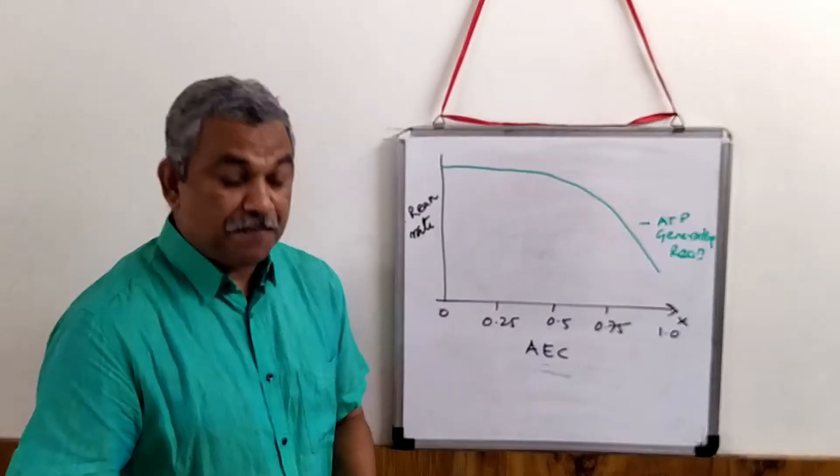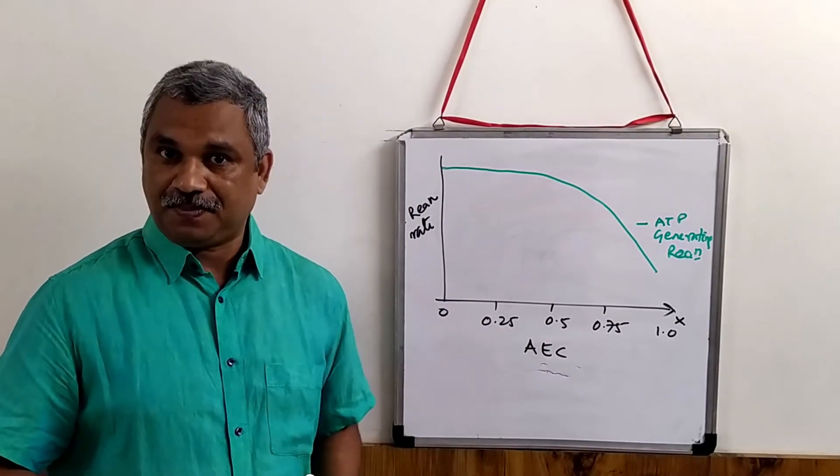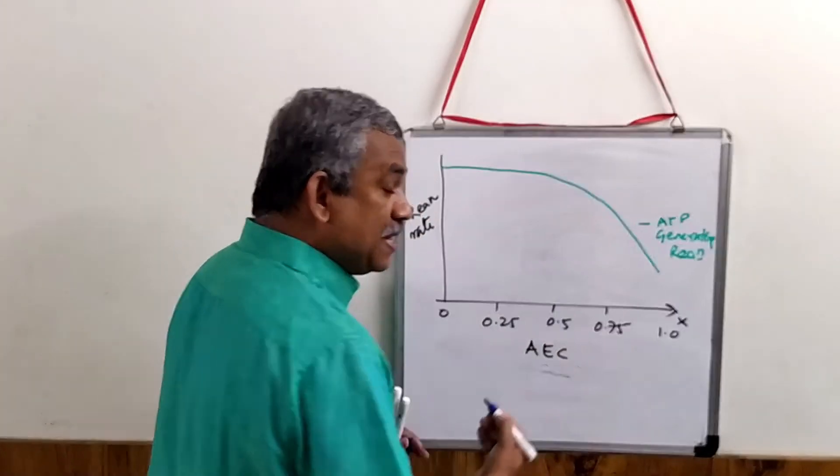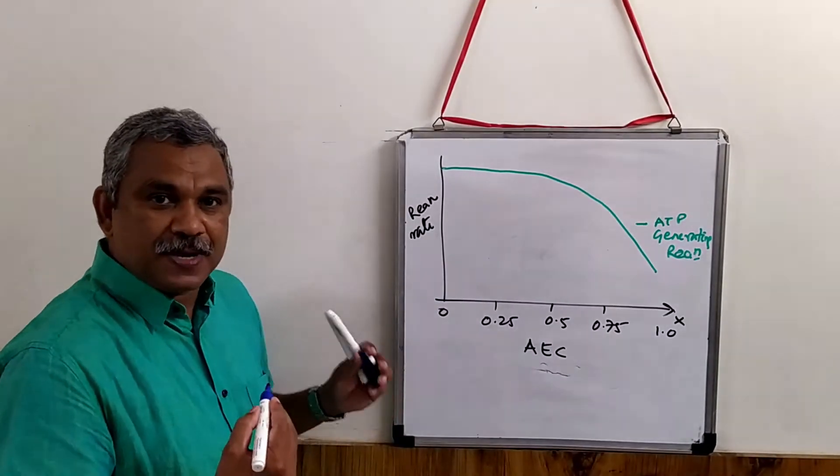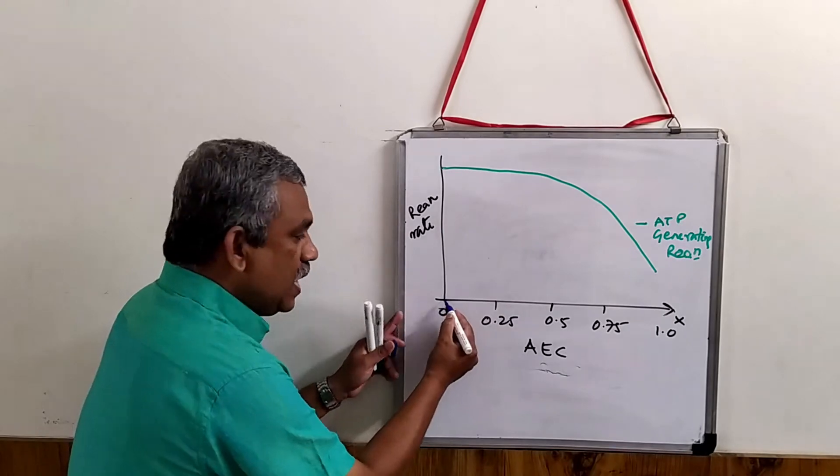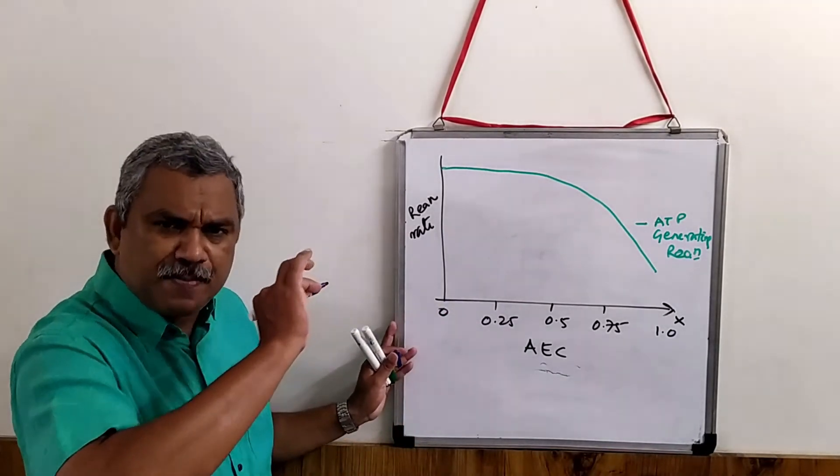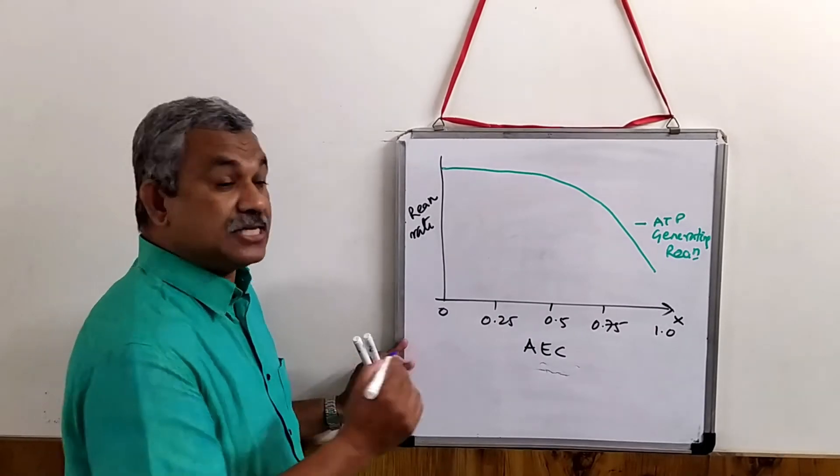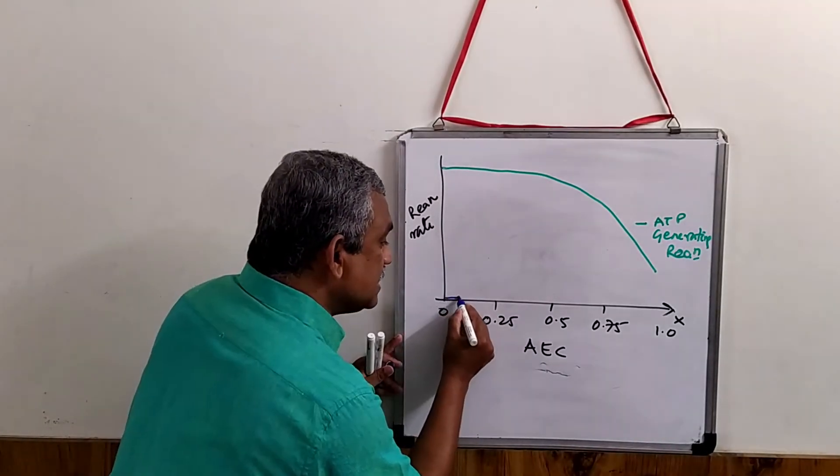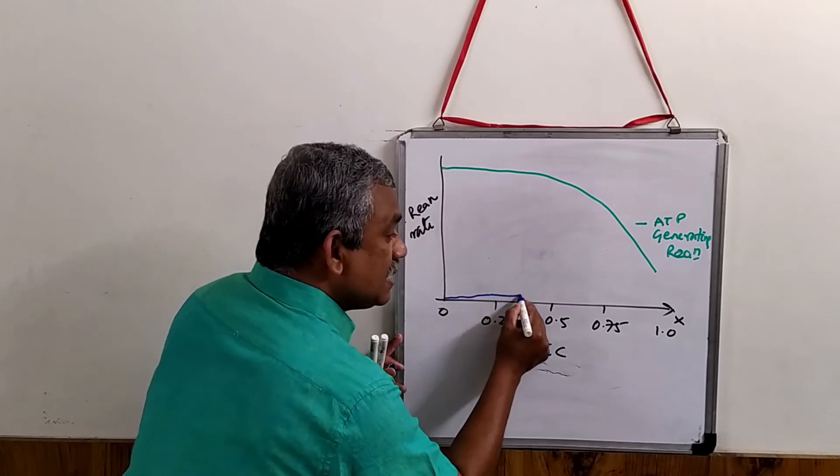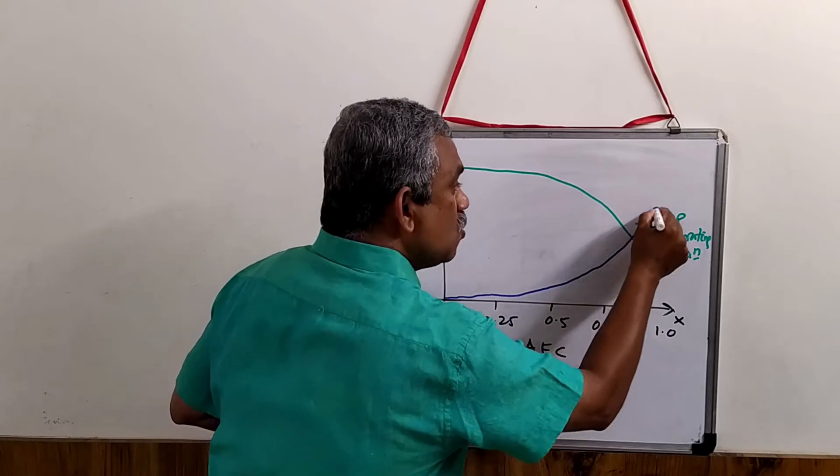Now, what happens? Suppose when the ATP levels are very high. So when ATP levels are very high, what will happen is, when it is very low, the biosynthetic reactions will be very, very low. There will not be a biosynthetic reaction promoted. So as the energy level increases, you will see that ATP-utilizing reactions are going up.